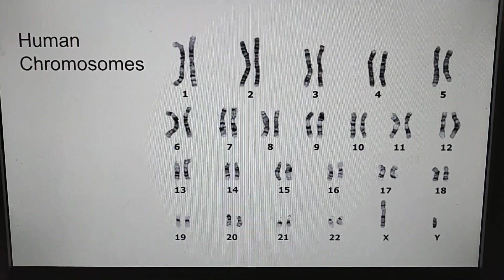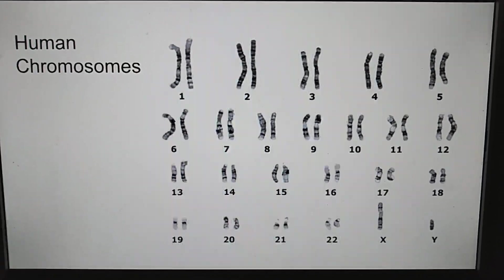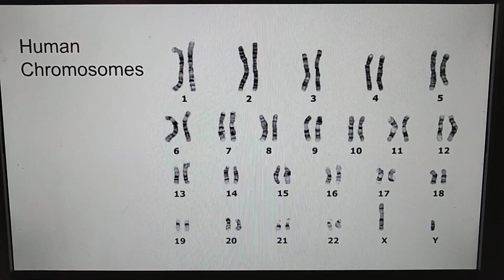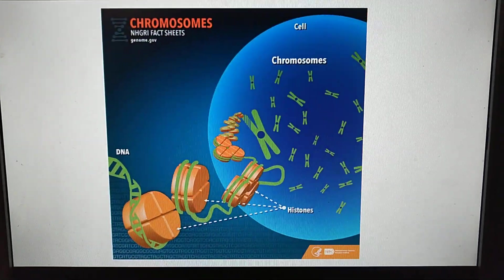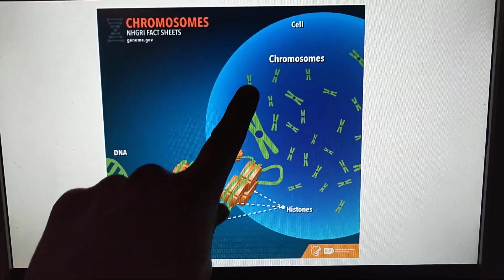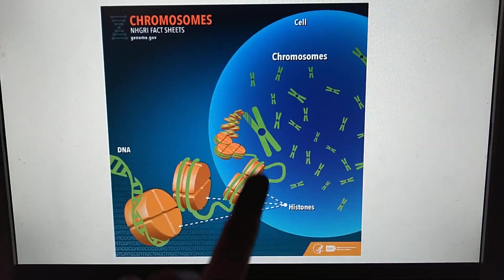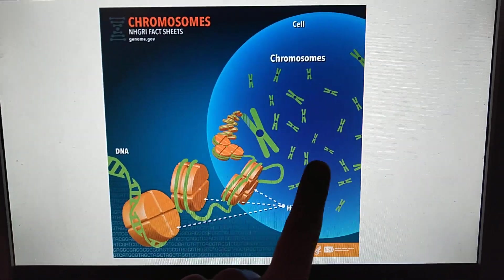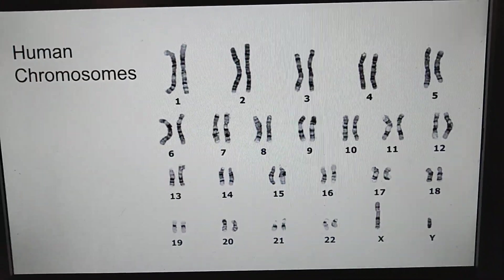That's called haploinsufficiency — you have to have two working parts of the chromosome to make the protein. Here is the cell, and inside the nucleus there are chromosomes — you can see all the chromosomes. That coincides with the last slide.